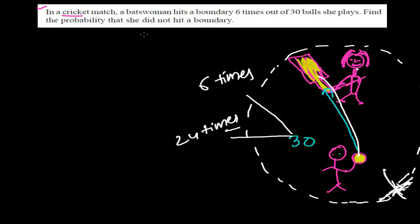So now what do we have to find out? The question is asking: find the probability that she did not hit a boundary. We know the probability formula — probability of anything is the ratio of total favorable events to the total events.